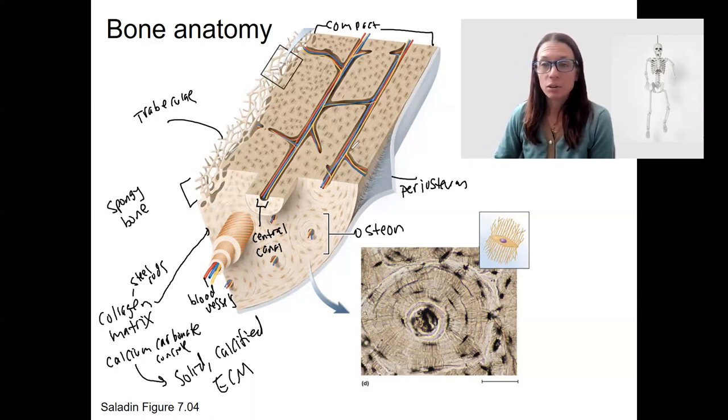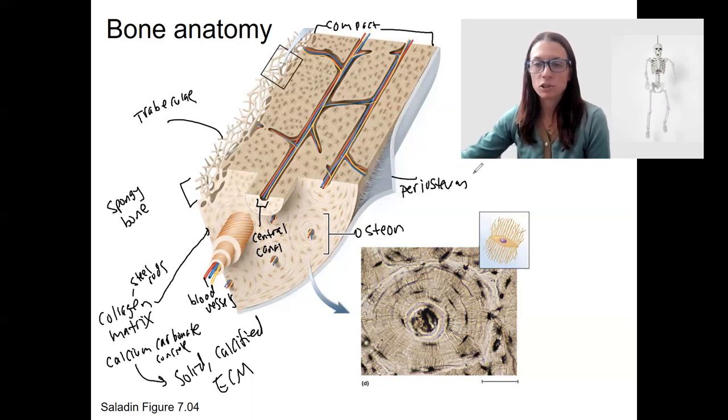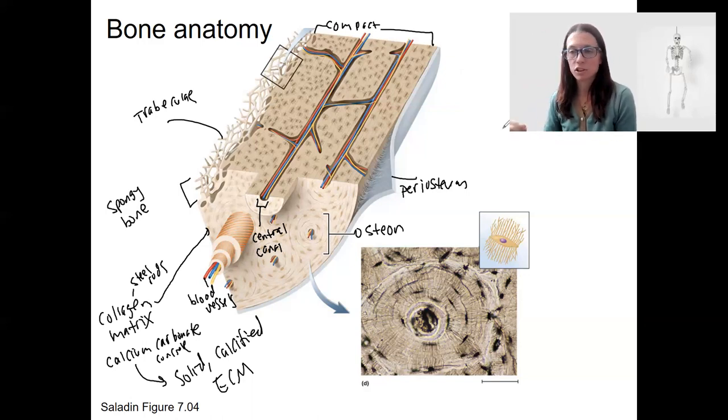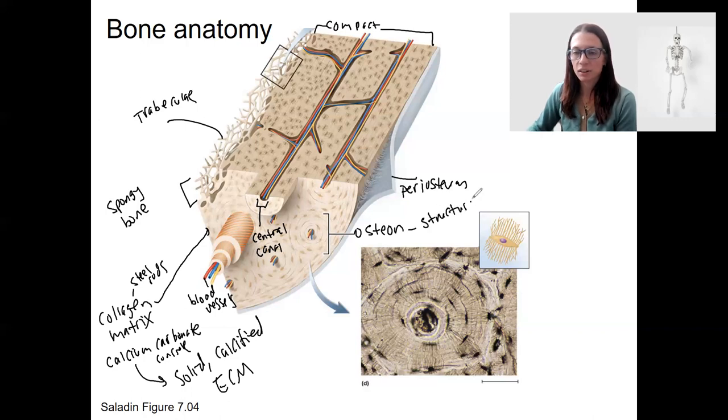Bone is a growing tissue. So it's constantly broken down, which is called resorption and then growing again. So about 10% of your skeleton in adults is turned over in a year. I will talk more about resorption and growth later. And then, okay, so let's zoom into this osteon, which is basically the structural unit of a compact bone.